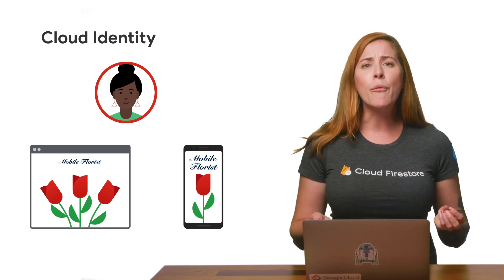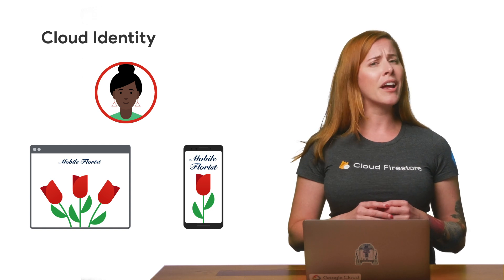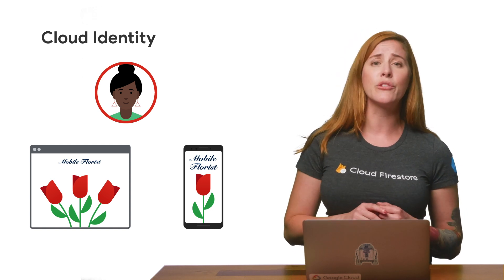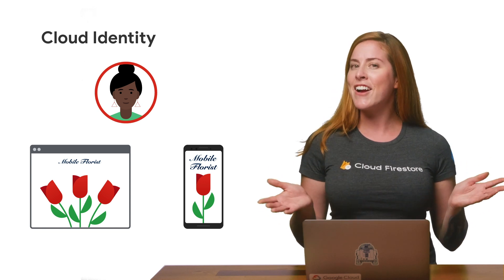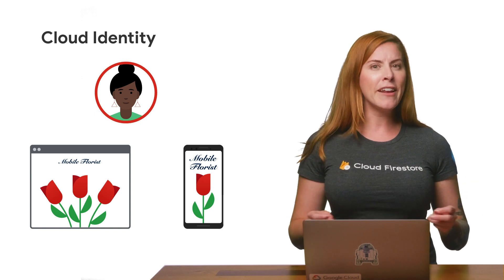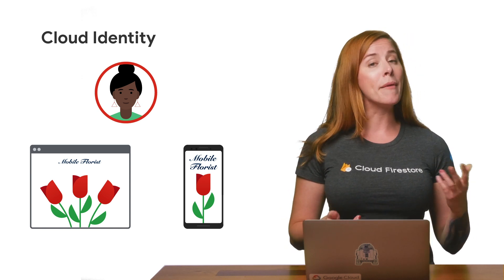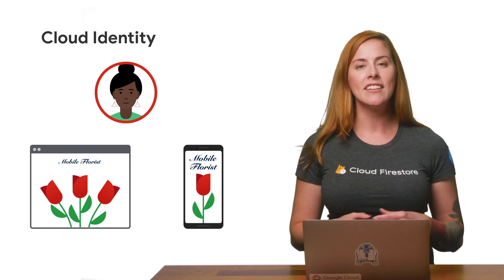Now, if I went in-depth on everything that Cloud Identity does, that would be a very long video. So rather than try to squeeze all this information into a single video, I've decided to make this series, Who's There? Exploring Cloud Identity. I'll be talking about four main facets of Cloud Identity: managing users, devices, directories, and apps. We will explore each facet of Cloud Identity in-depth, starting with managing app authentication and authorization through Cloud Identity Platform.